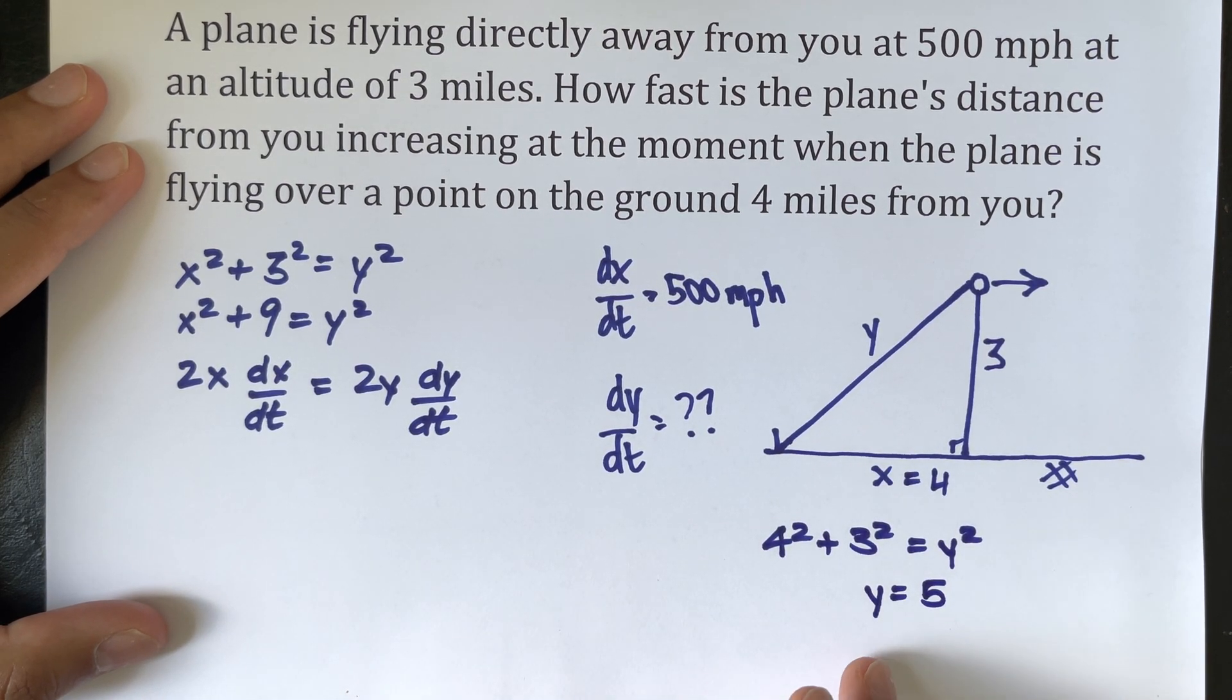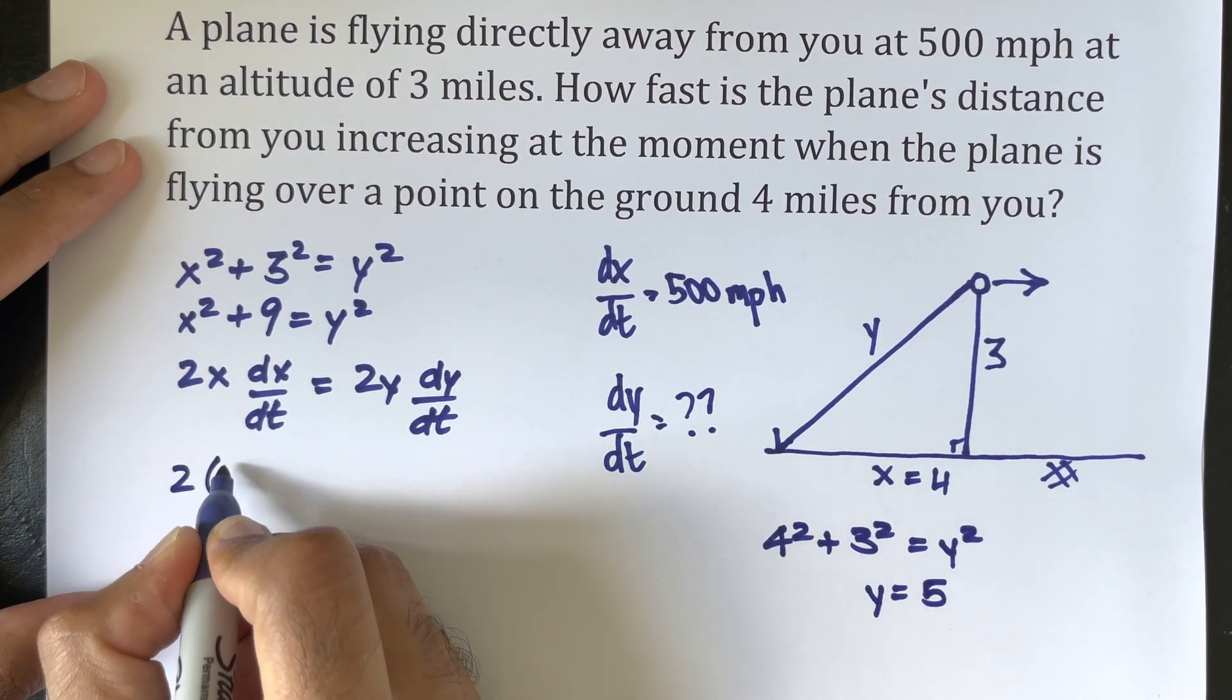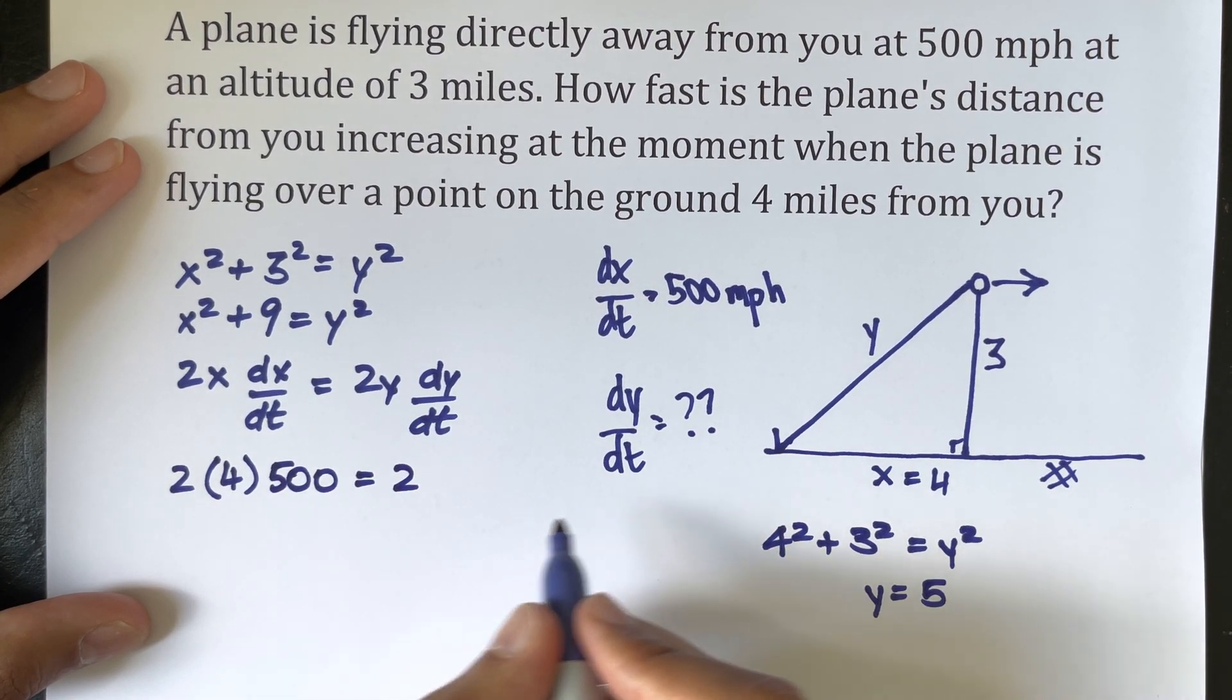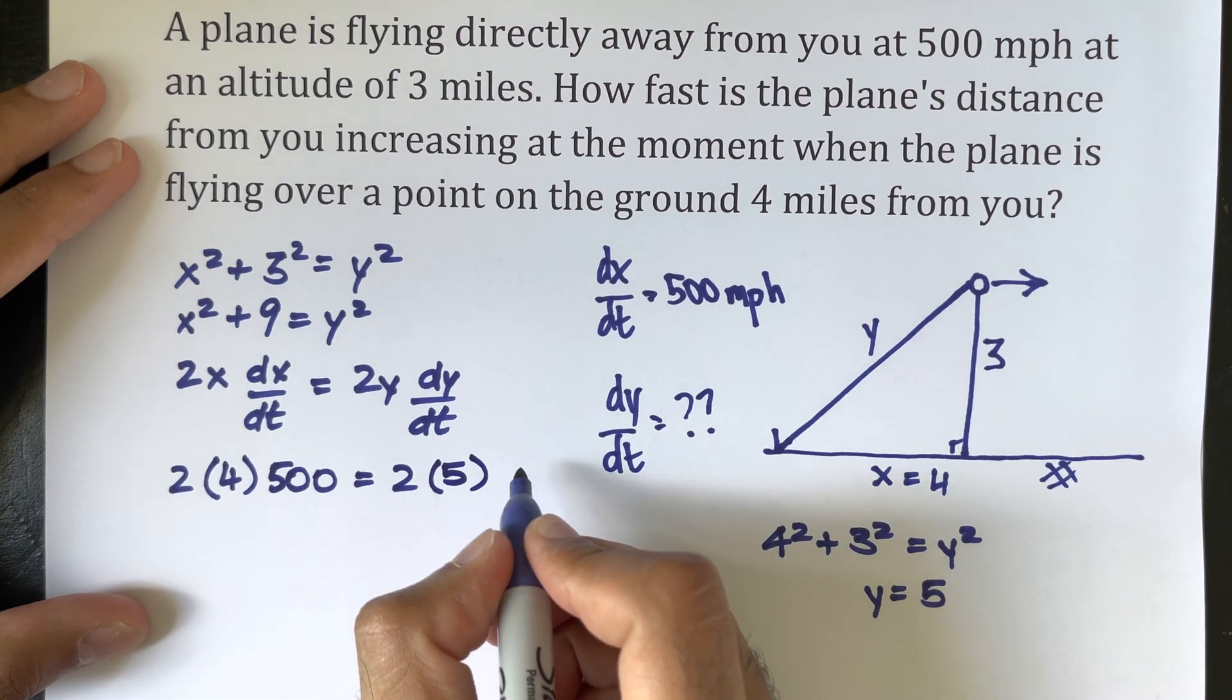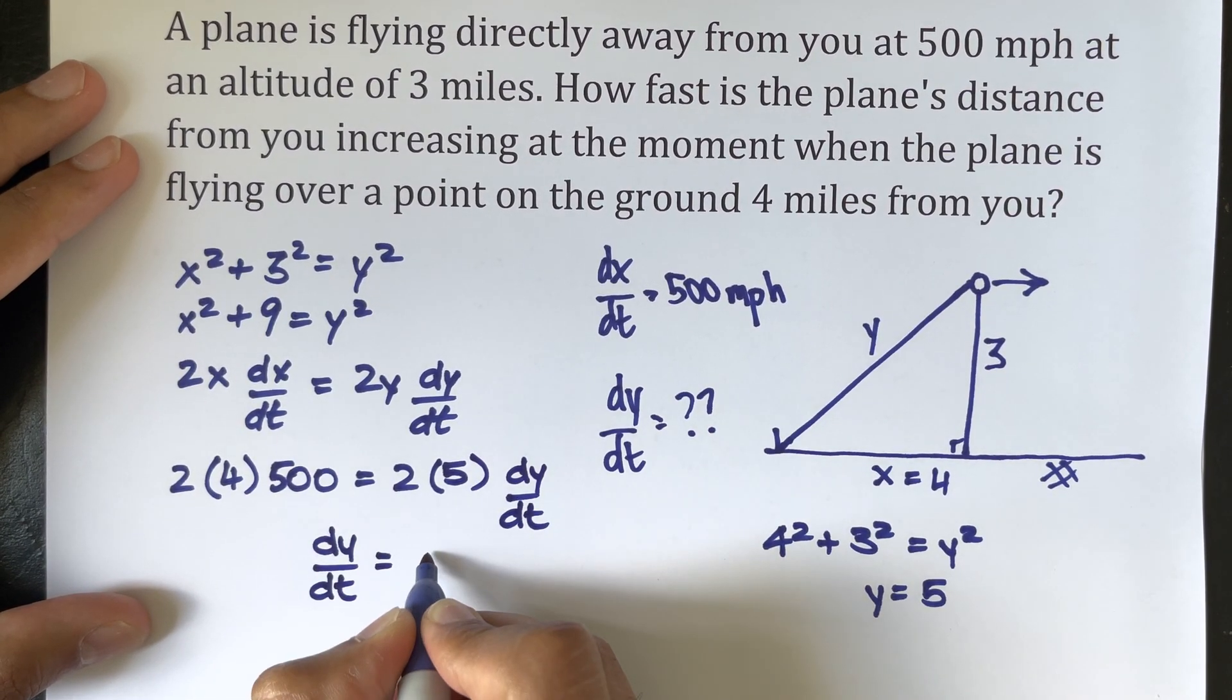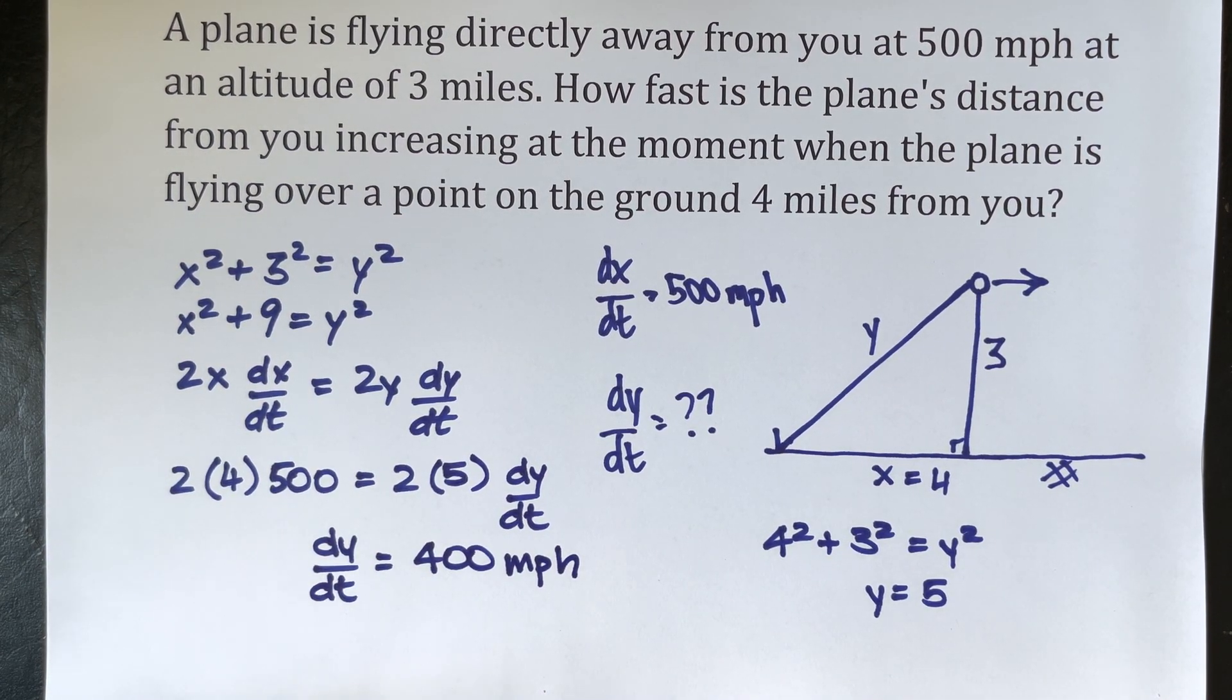And with this value we are going to put it into our derivative we calculated earlier. So we know that to be 2 times x, which is the distance of 4, times dx over dt, which is the speed of 500, being equal to 2 times y, which equals 5, times dy over dt. And solving that we will get dy over dt being equal to 400 miles per hour. That is how you would solve this question of related rates.